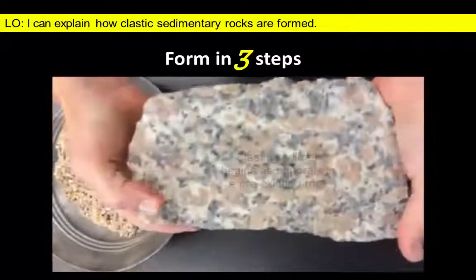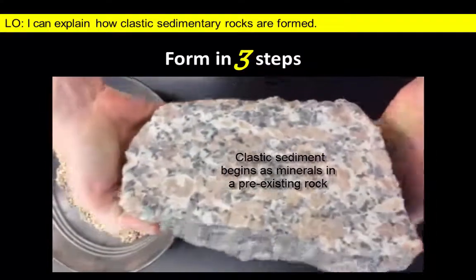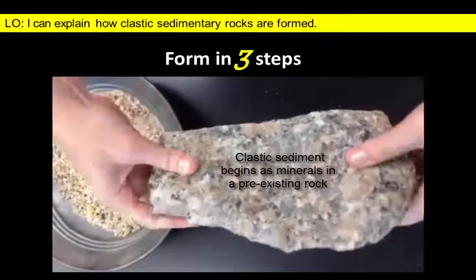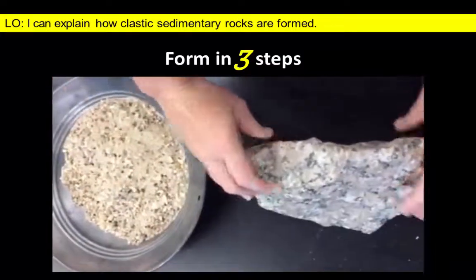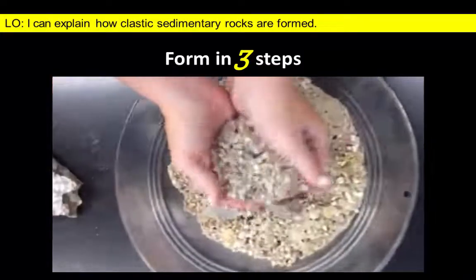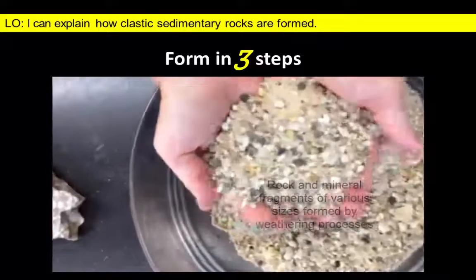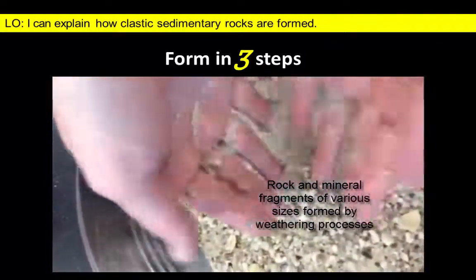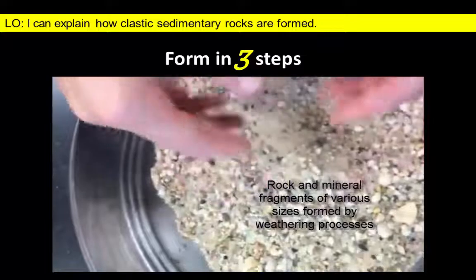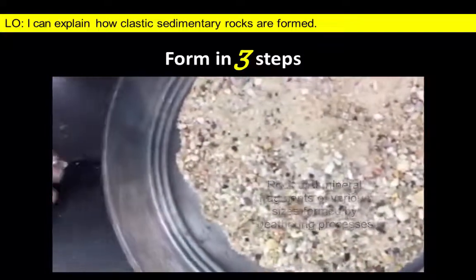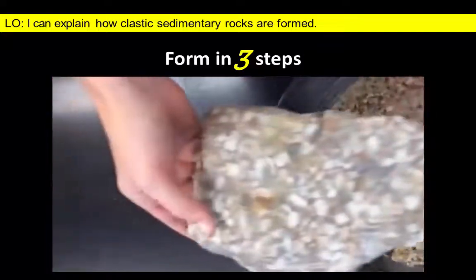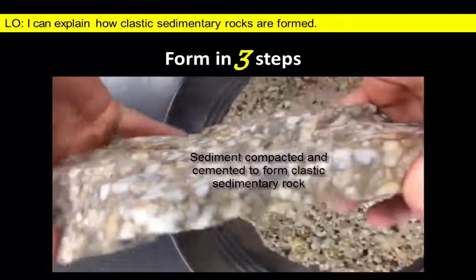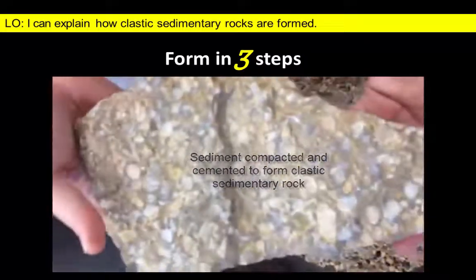There are three steps in the formation of clastic sedimentary rocks. Clastic sediments are composed of fragments of rock — a clast is a technical word geologists use to describe a rock fragment. These fragments weathered from pre-existing rocks to form sediment of various sizes. This sediment is then transported away from its source area, and finally it is deposited and converted to form a new rock through lithification.